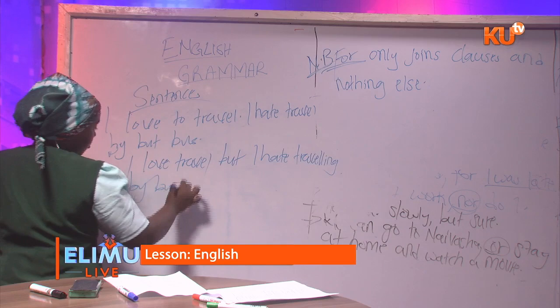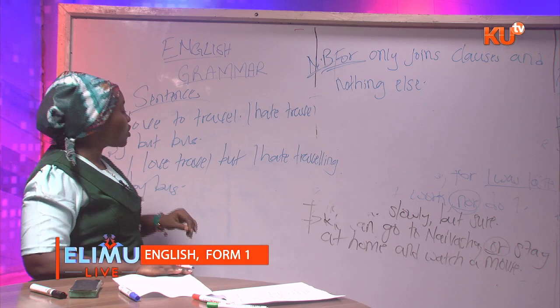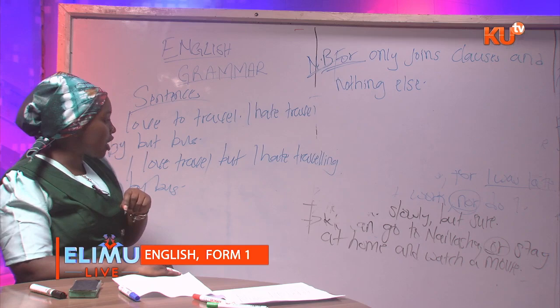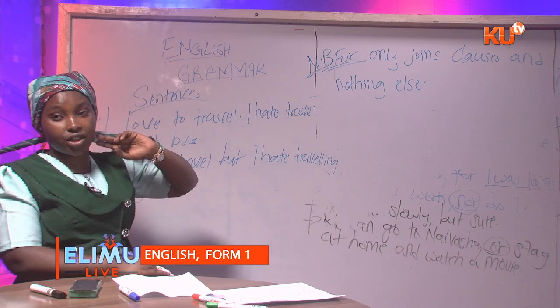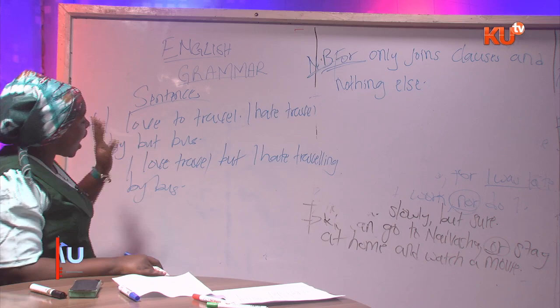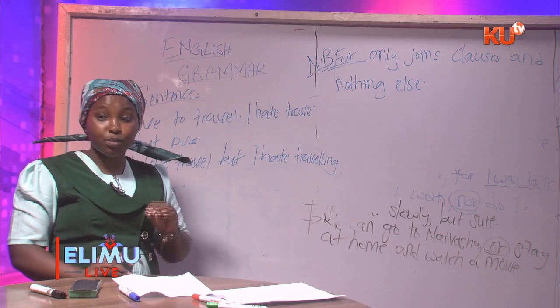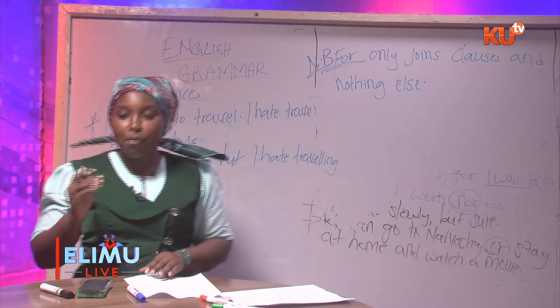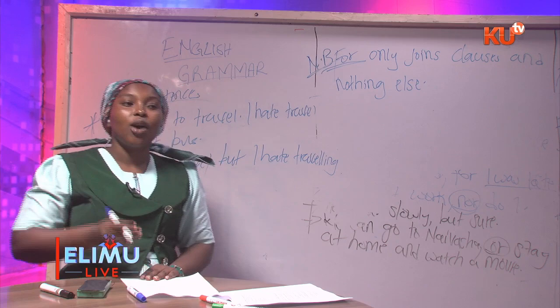Note that our word was 'travel,' but when you join the sentence to make it grammatically correct, you say 'I hate traveling,' adding '-ing.' You cannot say 'I hate travel by bus' — that would be grammatically wrong. So as much as you are joining your sentences, make sure they are grammatically correct.